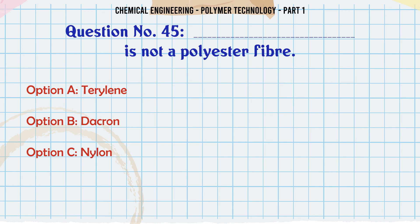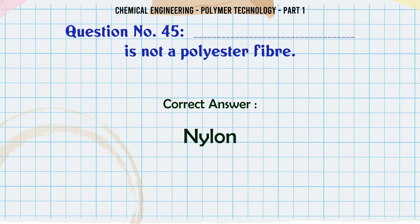Which of the following is not a polyester fiber? A. Terylene, B. Dacron, C. Nylon, D. Polyacrylonitrile. The correct answer is Nylon.